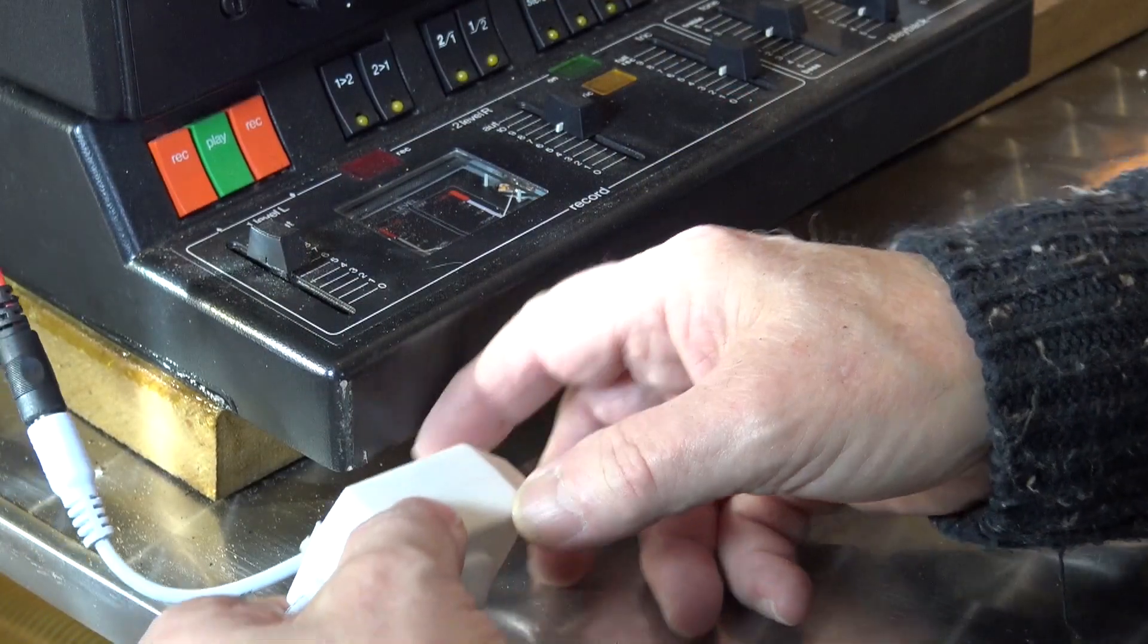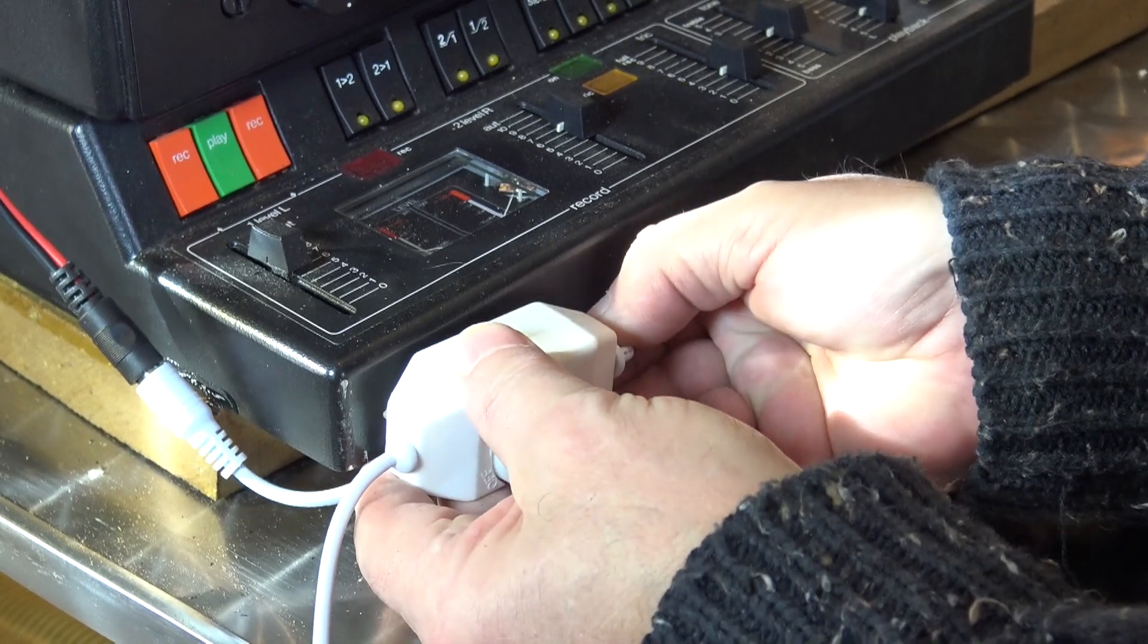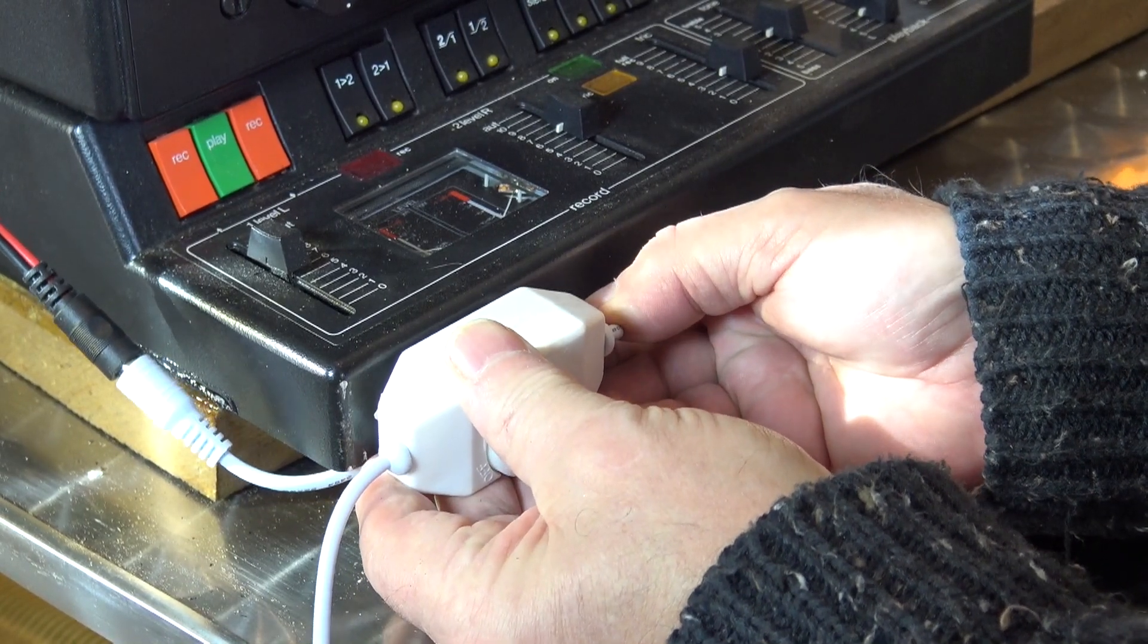I'm going to position the dimmer down here for ease of operation. Just stick it on there with double sided tape.